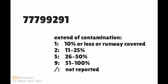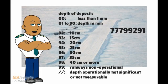In the example, 51 to 100% of the runway is covered with ice, indicated by the number 9. We have already decoded half of the message. The next two numbers, 92, indicate the depth of the deposit.